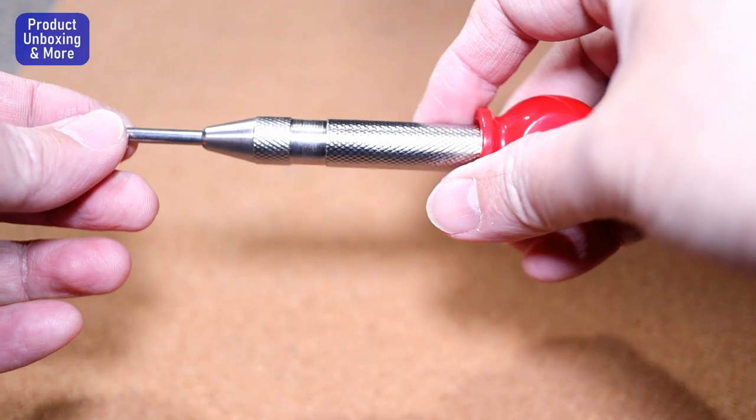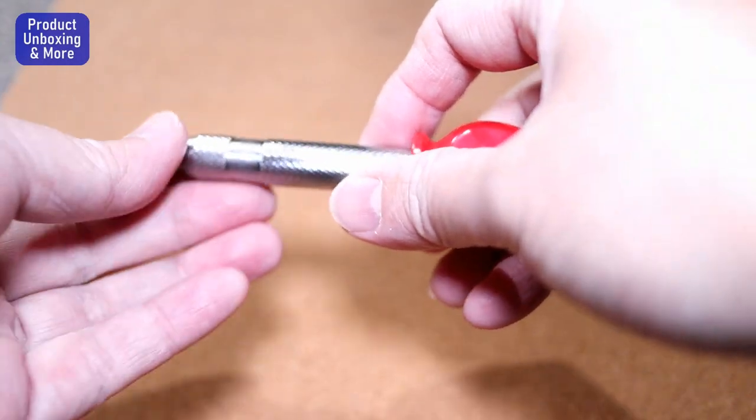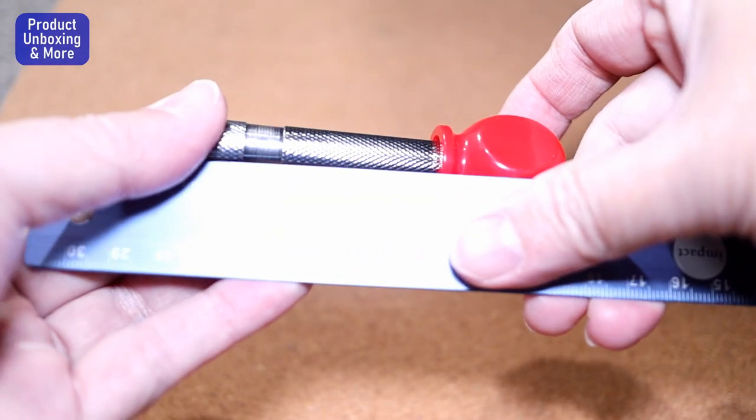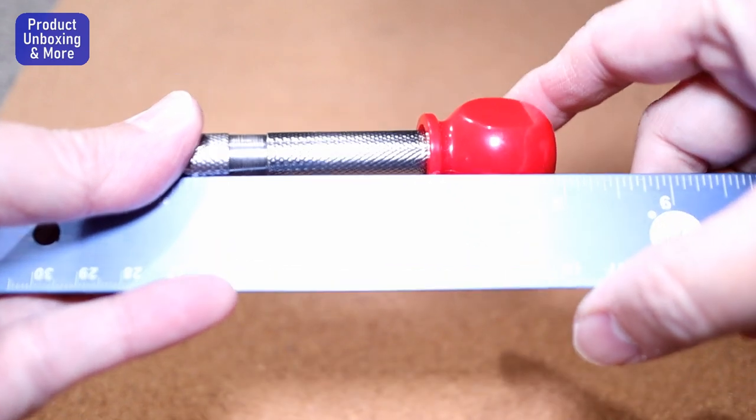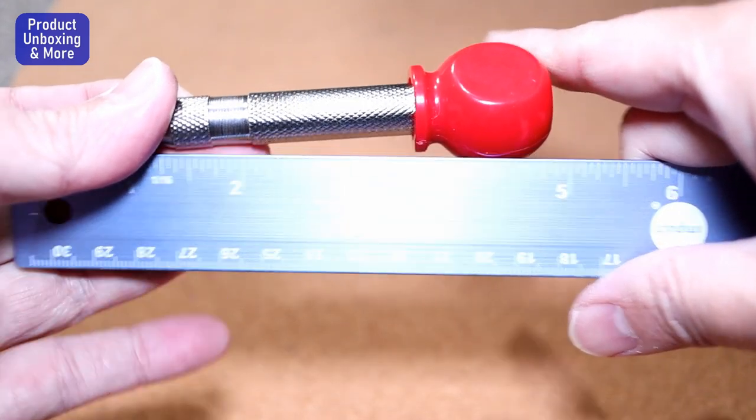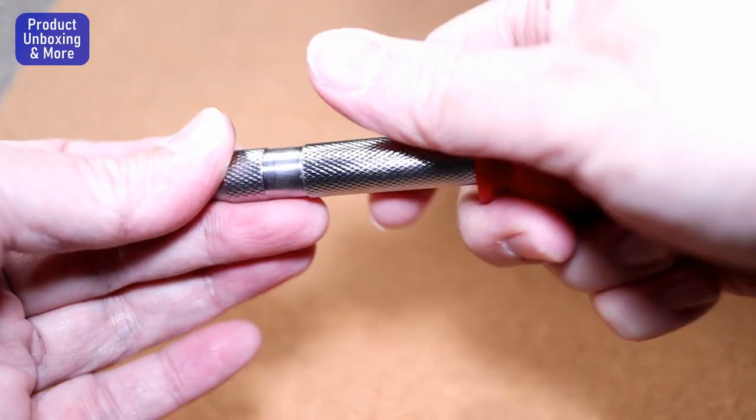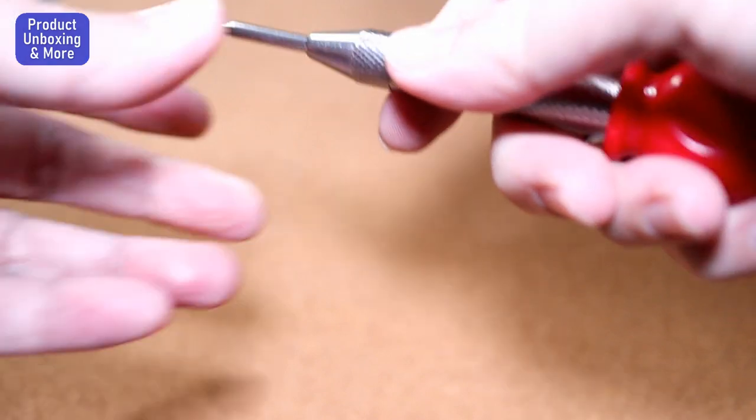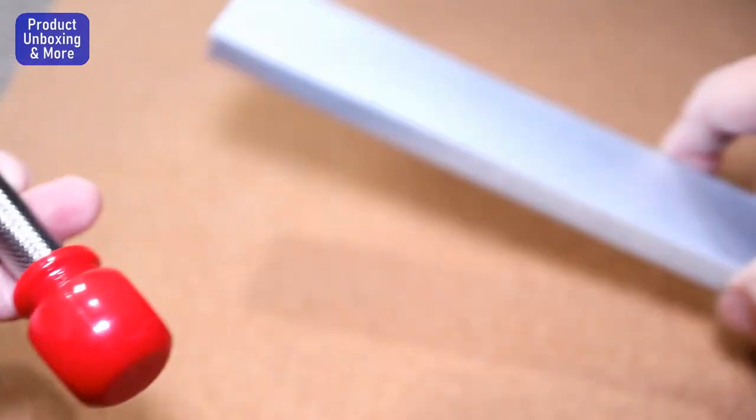Hi guys, today we'll give you a demo on this spring-loaded center punch. Let me measure the length - it's five inches. It's really easy to handle and I'll show you a demo.